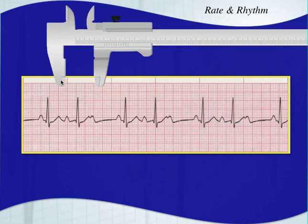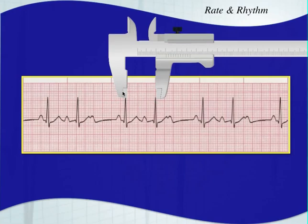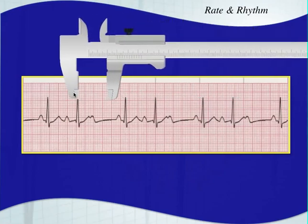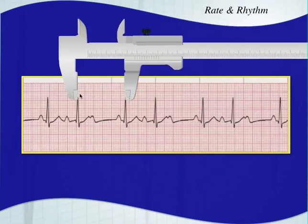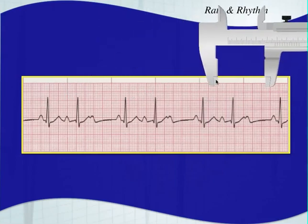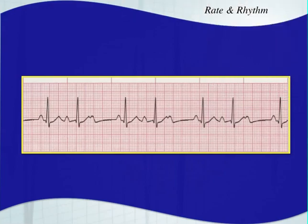This one is irregular — you can see it right off the bat. Let's see if there's a pattern. This space is the same as this space, and these spaces are also the same. There is a pattern, so we'd call this regularly irregular. Since there's an irregularity we use the six-second rule: one, two, three, four, five, six, seven — about 70 beats per minute.